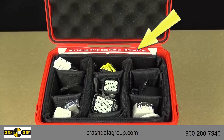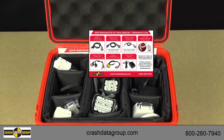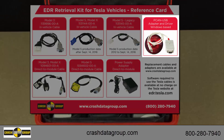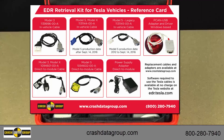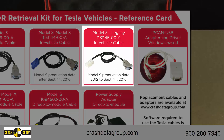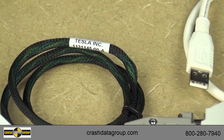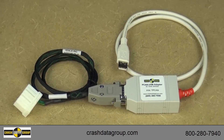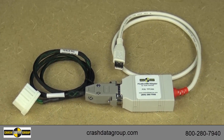Consult the reference card contained in your kit. The PECAN USB adapter is used for all downloads. The PECAN device driver must be installed on your computer. We'll use the genuine Tesla cable with part number 113-1145-00A for a 2014 Model S in-vehicle download. Connect the connection cable to the PECAN adapter and tighten the screws to maintain a good connection.